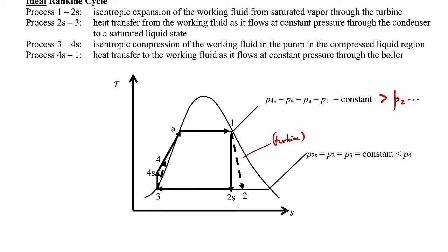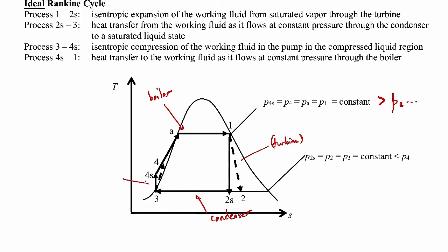Going through the boiler is a constant pressure process, so we stay on the same isobar. We're in a compressed liquid state, we hit point A — a saturated liquid — and then continue along at constant pressure back to the saturated vapor state at state 1, and repeat the loop. The ideal Rankine cycle follows the solid black lines; what makes it ideal are the isentropic processes through the turbine and pump. The actual Rankine cycle, with irreversibility, follows the dashed lines from 1 to 2 and 3 to 4.